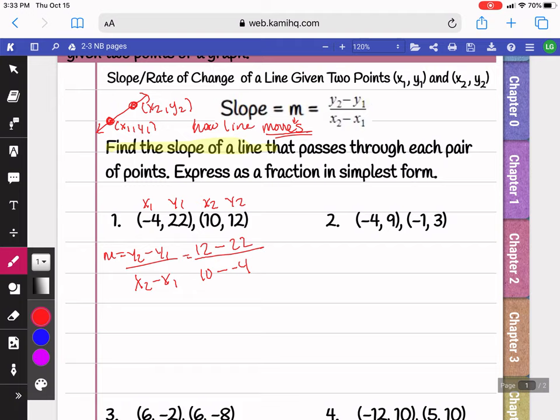So I have minus negative 4. Anytime you have minus a negative, that's actually going to change to a plus. So now 12 minus 22 is negative 10. 10 plus 4 is 14. We want to simplify so you can divide both these numbers by 2. And when you do that, our slope becomes negative 5 over 7.